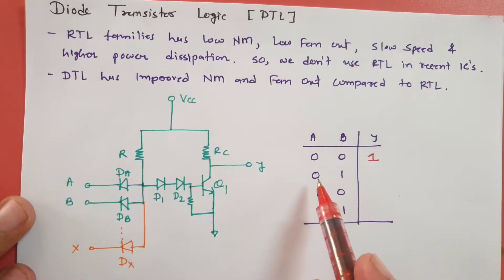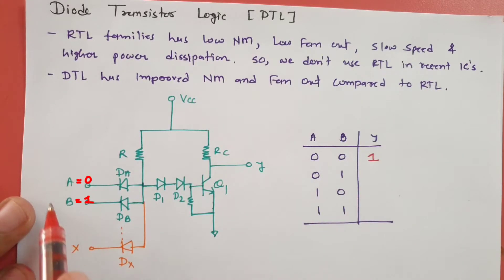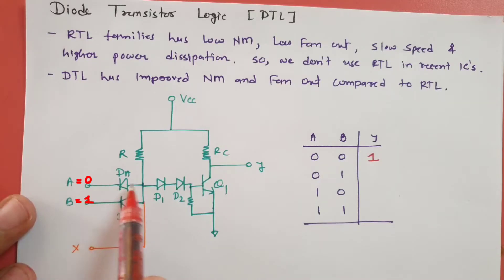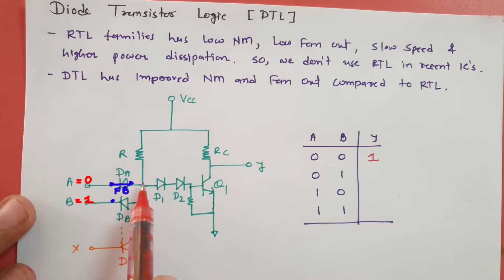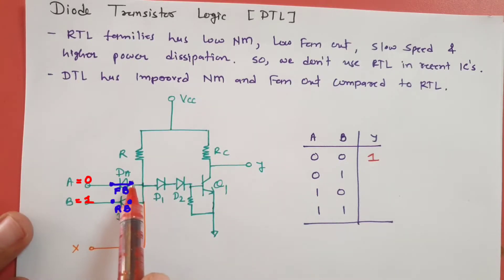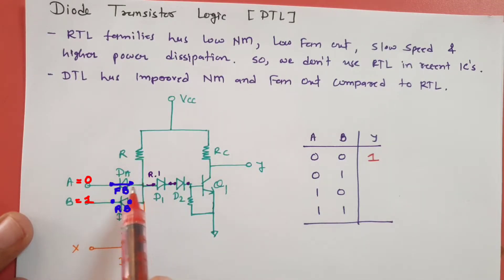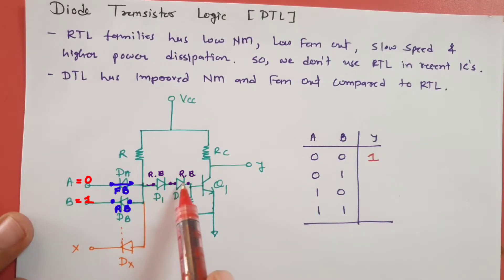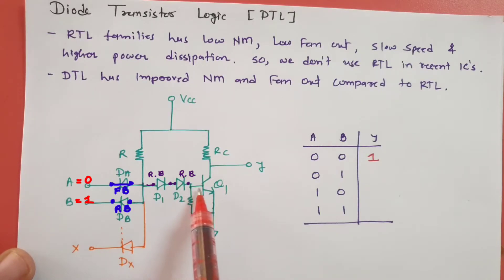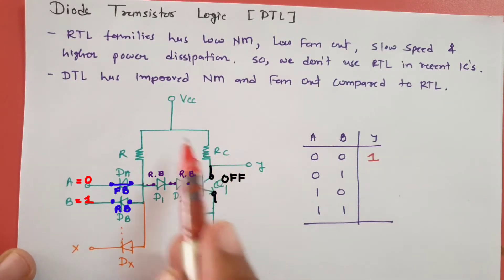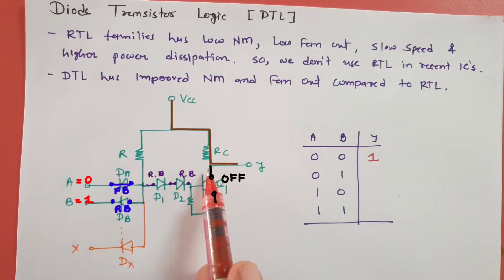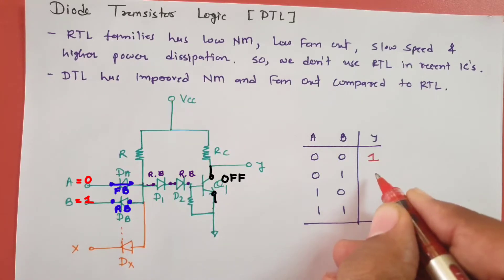In the second case, A = 0 and B = 1. Here, DA comes into forward bias and DB comes into reverse bias. Since DA is in forward bias, D1 and D2 remain in reverse bias. With D1 and D2 in reverse bias, base current to Q1 is ideally 0, Q1 is off, the output is at VCC — active high — so the output is logic 1.